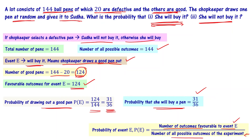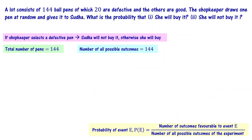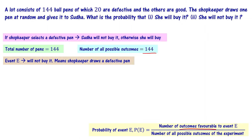Second part: What is the probability that she will not buy it? Event E is defined as she will not buy the pen. For this to happen, the shopkeeper has to draw a defective pen. What is the probability that the shopkeeper will draw a defective pen?